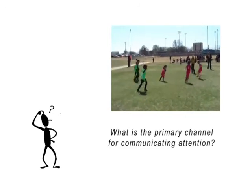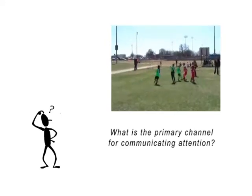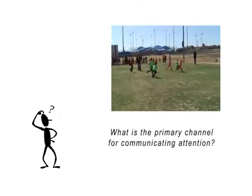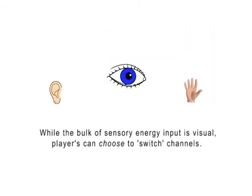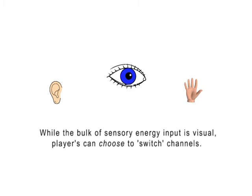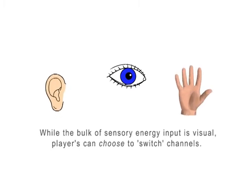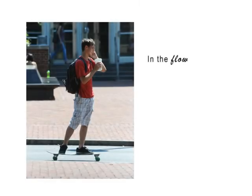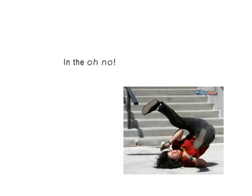Not only does each player have to rapidly decide who and when to join with, but they also have to decide on which energy channel to concentrate on. The choice of channels can be understood in terms of thresholds. With the visual system as the default channel, auditory and tactile energy must reach very high levels to gain dominance. This requires a lot of conscious effort and is difficult to maintain. These three channels are interdependent. When they work together smoothly, they increase situational awareness. When they don't, they create friction.